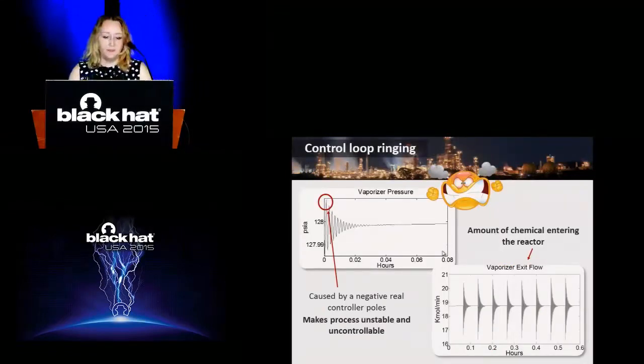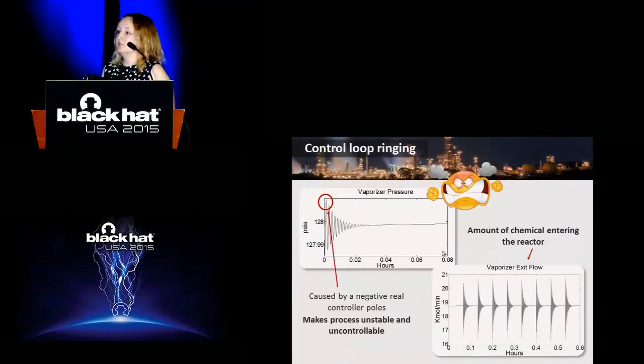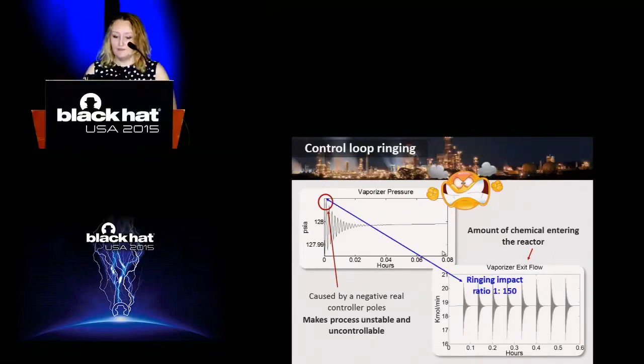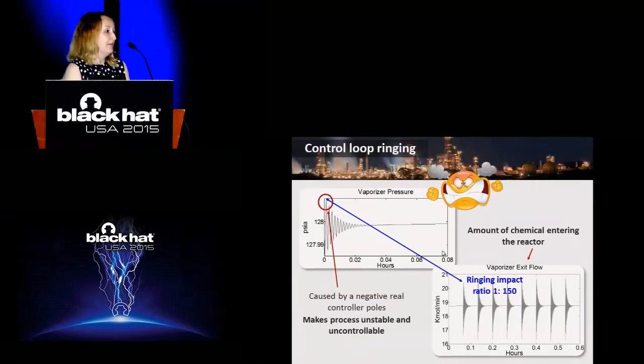Another problem with the attack I will need to deal with: in this specific plant there are a lot of control loops which have ringing effect. Even if I change something slightly, if you see this red circle, the deviation of the ringing is actually quite small. The problem is this effect propagates, and in other control loops it causes ringing in the ratio of 1 to 150. The problem was those peaks were causing alarms. It was a big problem because it meant we were not effective in controlling a lot of control loops. We had to find a way how we still could do it and overcome this problem. All of these issues the attacker has to deal with.